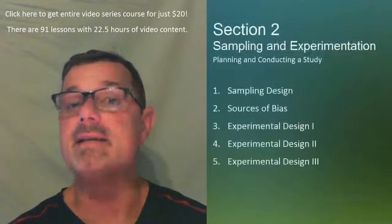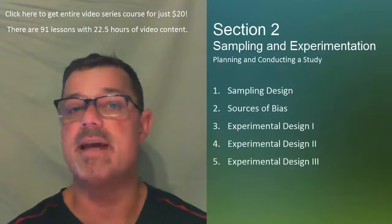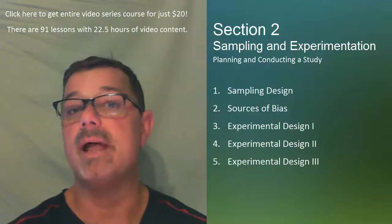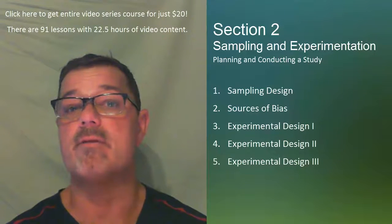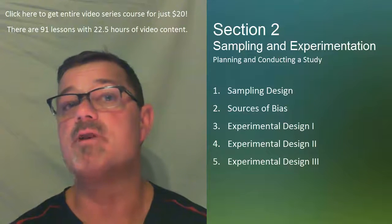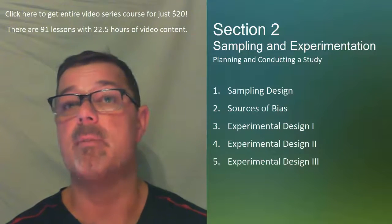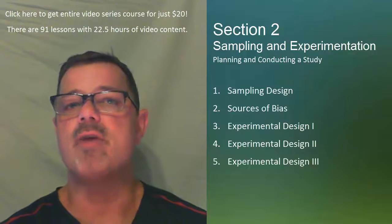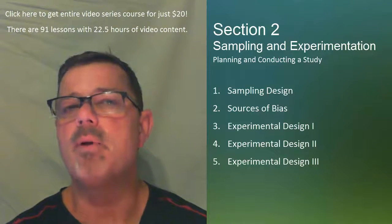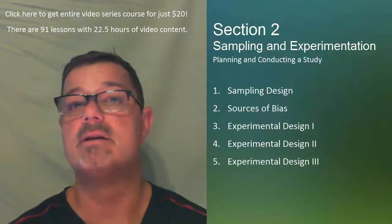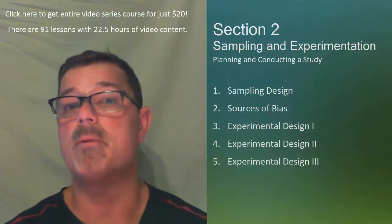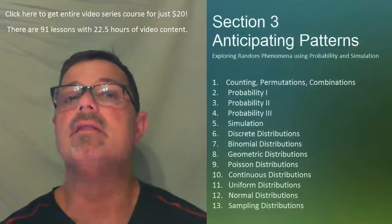The second section of this course covers sampling and experimentation. Here we learn how to plan and conduct studies necessary for statistical inference. We investigate the differences between observational studies and experiments and the qualities and attributes associated with the design of a good experiment. Proper sampling techniques are discussed as well as possible sources of bias that arise within proper sampling.